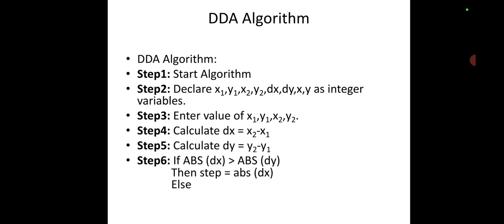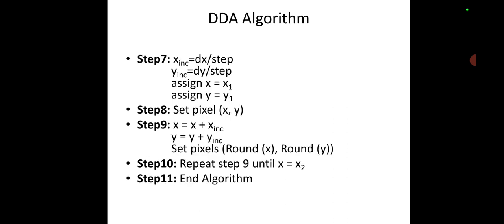Step 6: If absolute value of delta x is greater than absolute value of delta y, then step is equal to absolute value of delta x. Which increment we are performing, either in x or y, depends on absolute value of delta x and delta y - whichever is greater, that we will be assigning as a step.